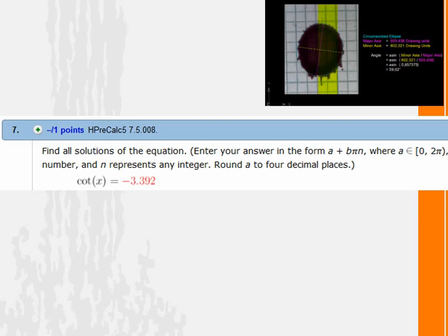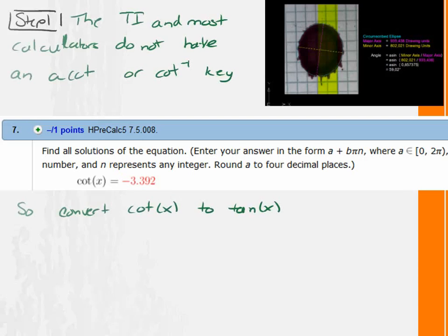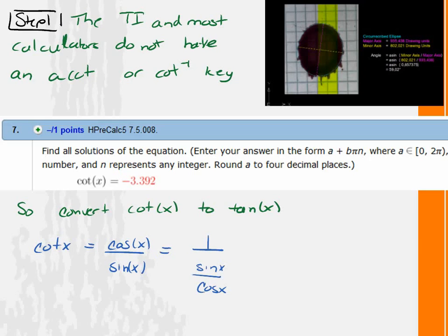So this is a WebAssign problem. Hopefully this format is working. And you're supposed to find all the solutions to this equation. And it's very similar to the cosine one I showed you the other day. The only difference is it has a cotangent in it. And the cotangent presents a problem. And the reason it's a problem is that most TIs and most calculators don't have a cotangent inverse key.